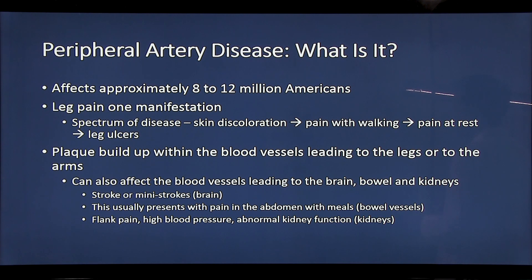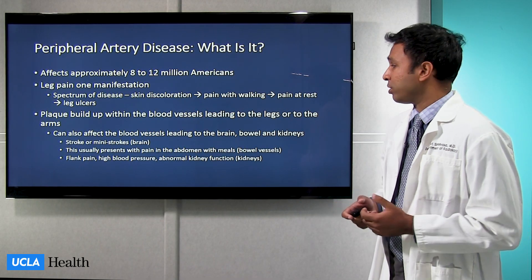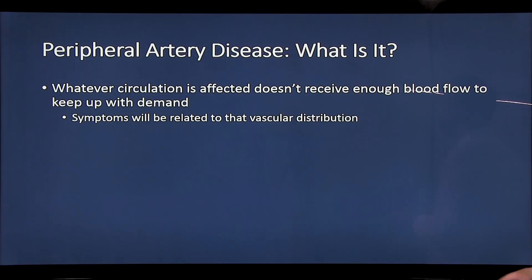Plaque buildup over time develops within the blood vessels leading to the legs and to the arms. This plaque buildup can also affect other blood vessel circulations, including the vessels that lead to your brain, causing strokes or mini strokes. It can also involve the vessels in your abdomen and cause patients to have pain with eating, or involve the vessels that lead to the kidneys, resulting in flank pain, high blood pressure, or poor kidney function. Whatever circulation is affected is essentially going to not receive enough blood flow and will have a hard time keeping up with the demand, with symptoms related to that vascular distribution.